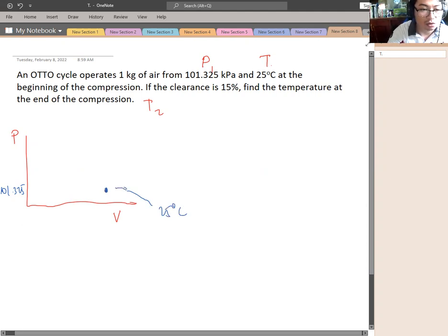So compression. We have the P2 here, point 2, then point 3 and point 4. So we have the Otto cycle. But our concern is only temperature at point 2. That P2, we don't have the value of P2.